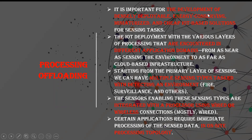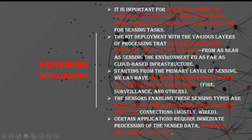Processing offloading is important for developing a densely deployable, energy-conserving, miniature, and very cheap IoT-based solution. This processing offloading deployment is encountered across various layers in different application domains — it is not limited to one particular domain. It can have a cloud-based infrastructure as well.